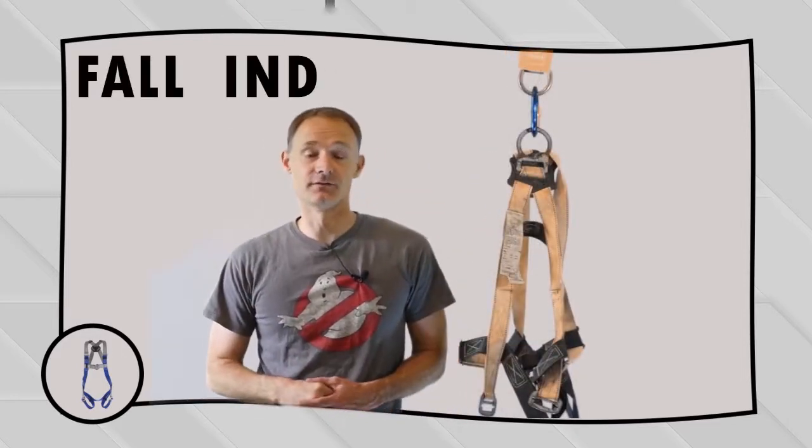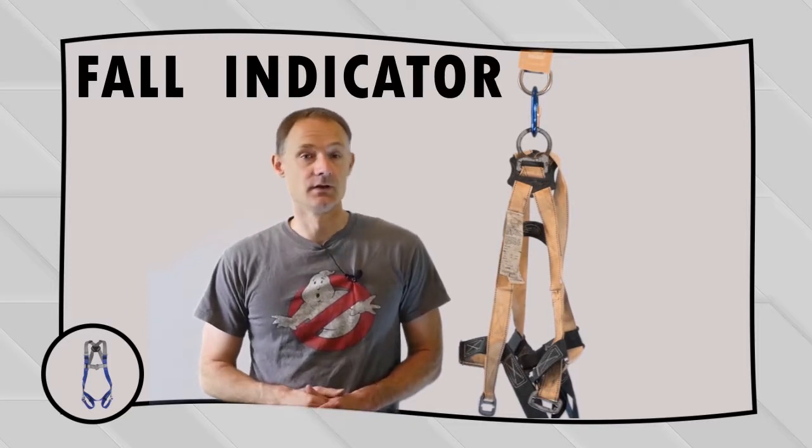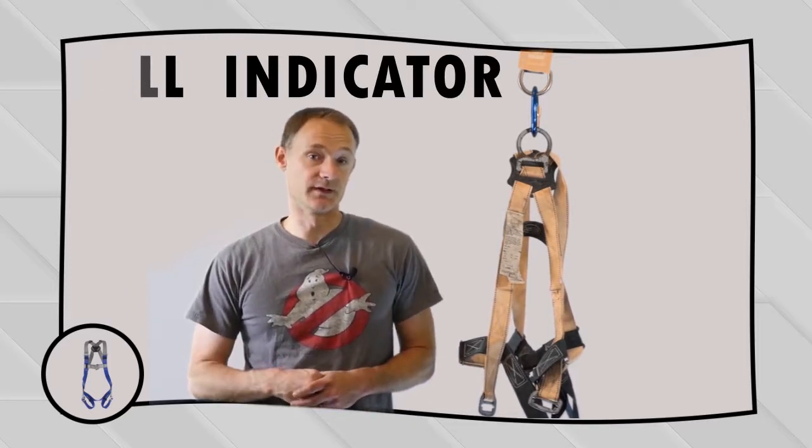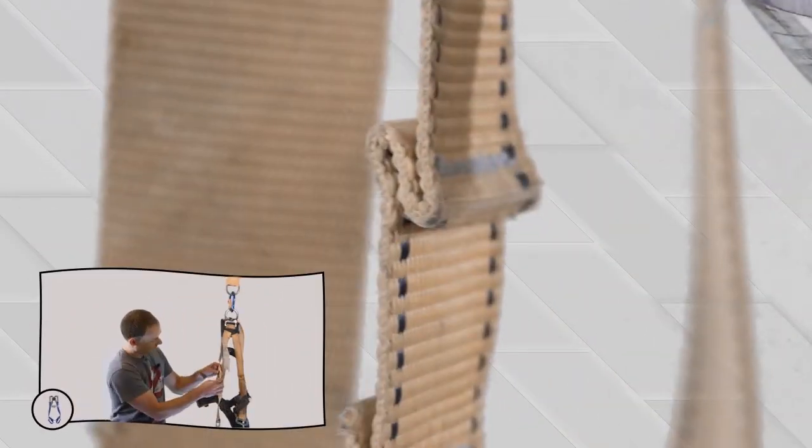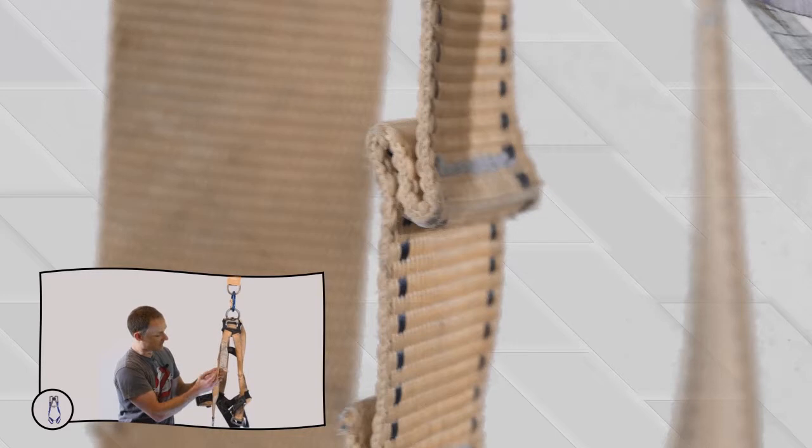So the last thing you want to check on a harness is to see if that has been involved in a fall. Now, most harnesses have some sort of impact indicators on there. A lot of them you'll find in the actual webbing. Here's an example. You can see that this part of the webbing has been folded over onto itself and then stitched closed.